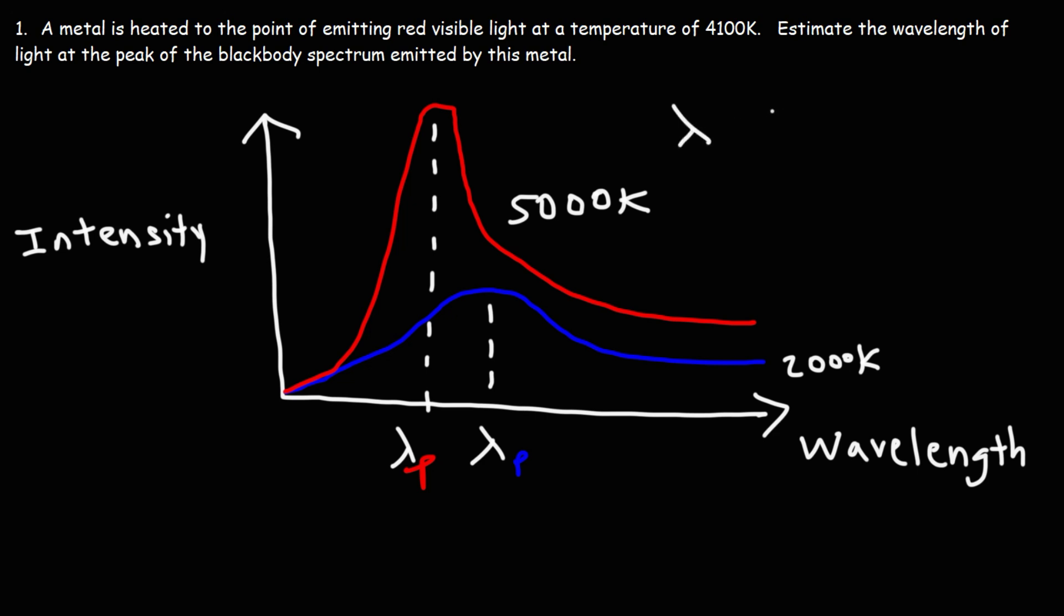As the wavelength of light decreases, the frequency increases, and this corresponds to a higher energy. So as you increase the temperature of a metal, it's going to emit light at a shorter wavelength with a higher frequency and more energy.